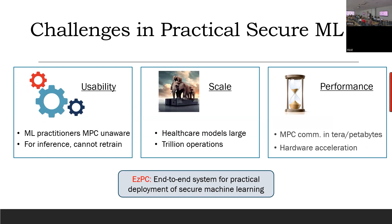The scale of these models is large — healthcare models are very large. We will also talk about running transformer models like GPT securely. Performance was a real bottleneck: MPC communication could easily go into terabytes. Because protocols were predominantly communication-bound, there was not much sense in hardware acceleration. We started to see that a new class of protocols based on function secret sharing could be compute-bound and not communication-bound, making them ideal candidates for hardware acceleration. The EzPC system was an end-to-end system for practical deployment of such secure ML tasks.